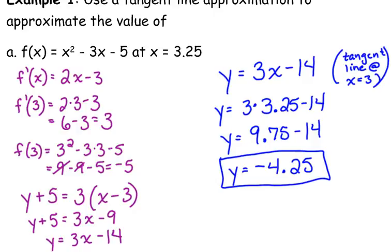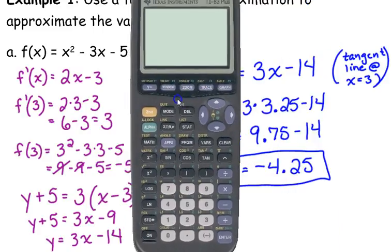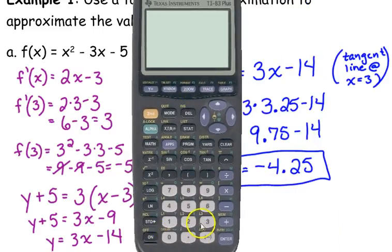Now I'm going to use my calculator to plug this into the original function just to see how close our approximation is. I'm going to plug 3.25 into the original function. It's pretty close. The actual value of 3.25 in f of x is negative 4.1875. Our approximation is negative 4.25. So it's pretty close to an approximation.